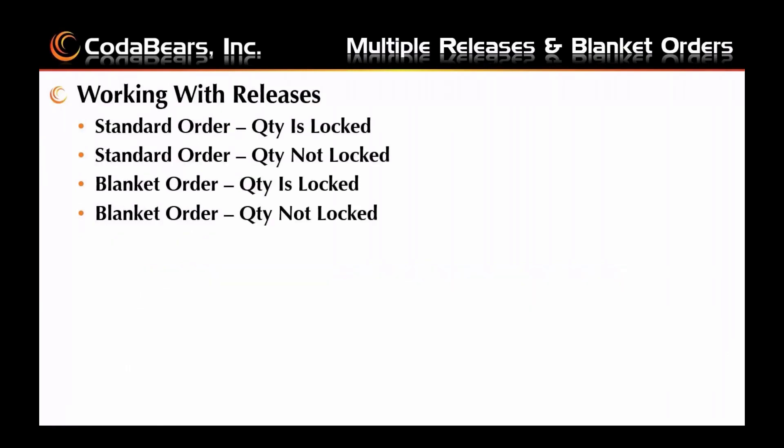Working with the releases, we'll show examples of four different types of orders: the standard order where the quantity is locked or not locked, and the blanket order where the quantity is locked or not locked. I'll mention the differences that happen in processing the sales order and related shipments based on which example we are reviewing.